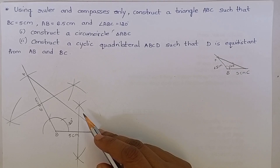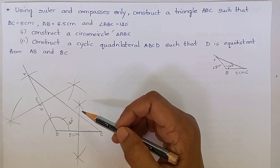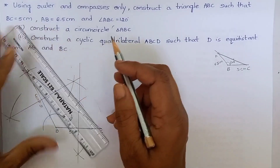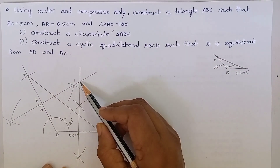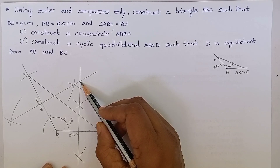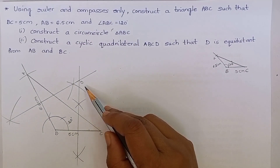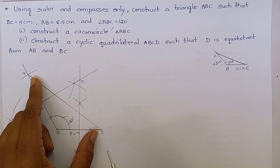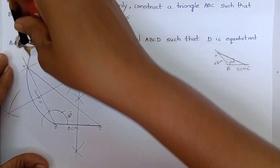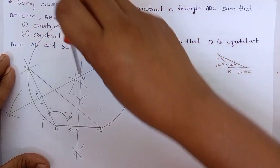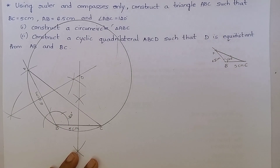Now we have to draw a circumcircle to the triangle. Let us produce these two perpendicular bisectors. These two perpendicular bisectors meet at this point. Let us name this point as O. O is the circumcenter of the circumcircle. Taking O as the center, draw a circle. We have constructed a circumcircle to triangle ABC.